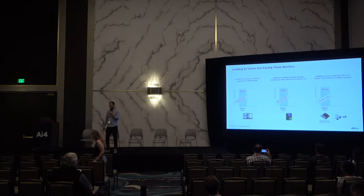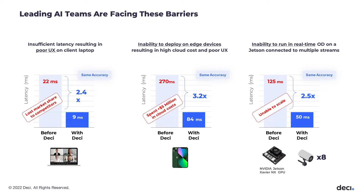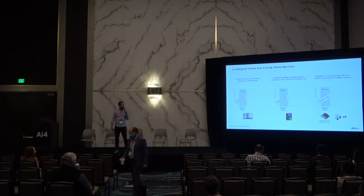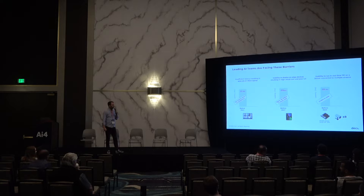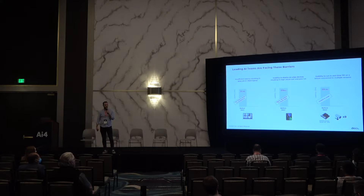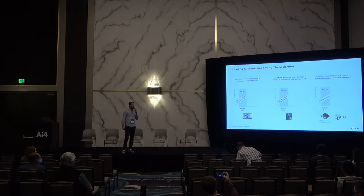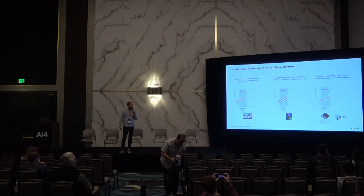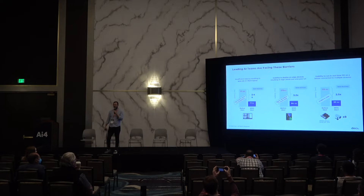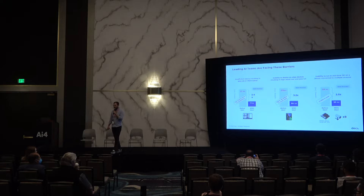Here's how we see it happening in the market from computer vision applications we are accompanying. One example is a computer vision application running in video conference apps that had poor UX based on high latency from semantic segmentation. Another is a company with large-scale cloud deployment serving millions of users, running with high latency and high cloud costs. And a security application on NVIDIA Jetson had high latency and high deployment cost due to the number of Jetson devices needed per site.